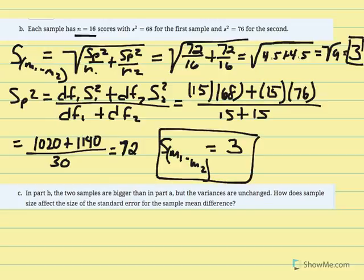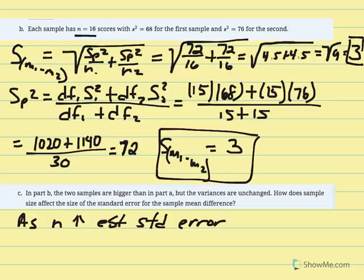Part C asks us to consider the effects of a larger sample size. As n increased, the estimated standard error decreased — from 6 down to 3. We can take this further: as n increases, estimated standard error decreases, and our t-statistic increases. Larger t-statistics mean a greater likelihood of rejecting the null hypothesis.